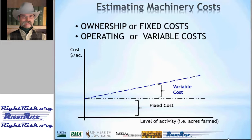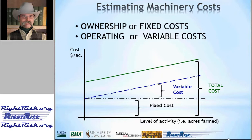The two cost categories together add up to the total cost of operating that machine over its use and over its lifetime at various levels of activity. We would expect total cost to increase as that level of activity increases, whether that be within a particular year or over its entire lifetime.